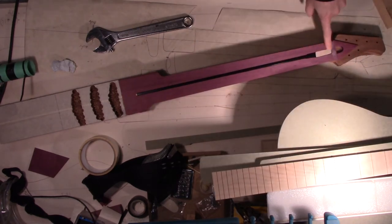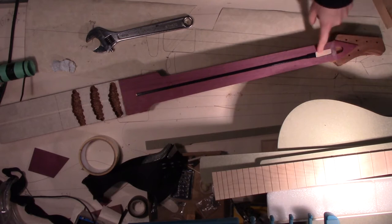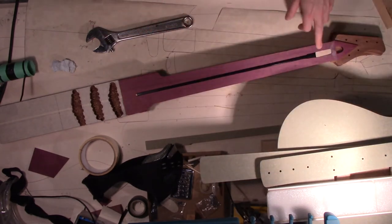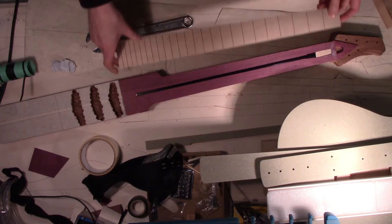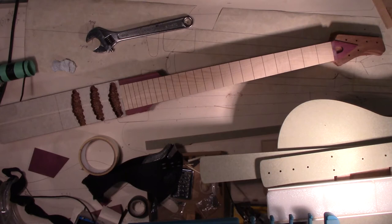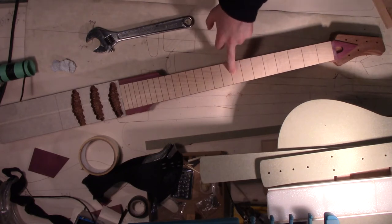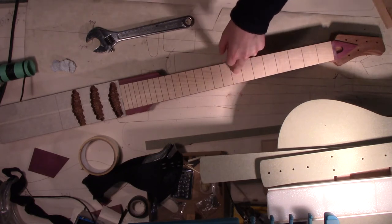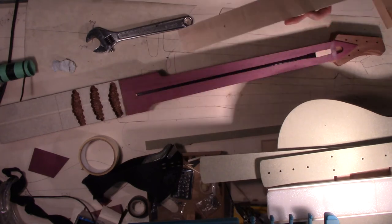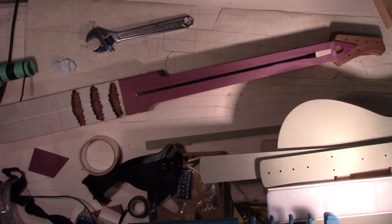And I've also put a bit of maple to cover the mechanism of the truss rod so that when I now glue the fretboard on it doesn't gum up the works. And I was going to glue the fretboard on next, but as we're having a cold spell and the glue needs to be above a certain temperature, that's going to have to wait until it warms up a touch. So I think the next stage is to start cutting the body.